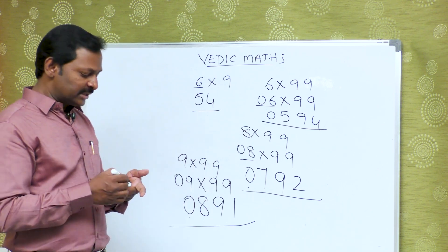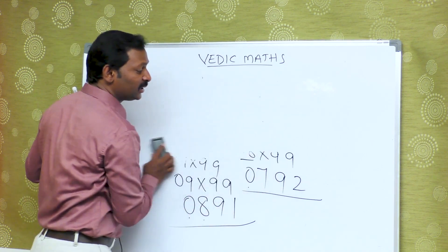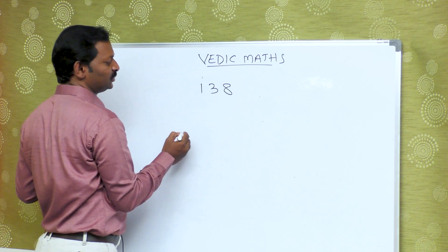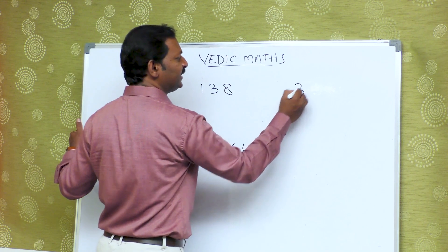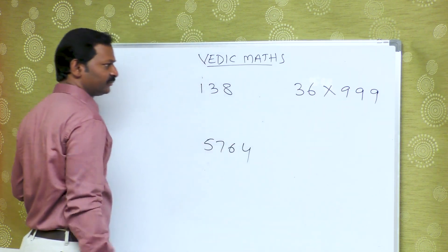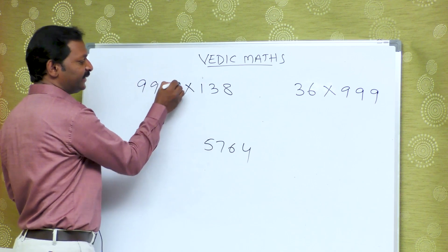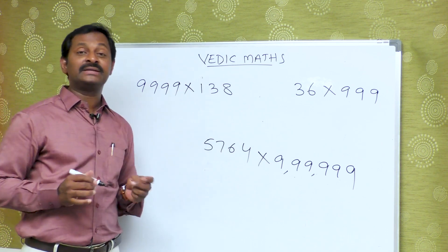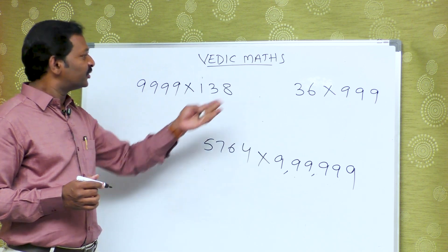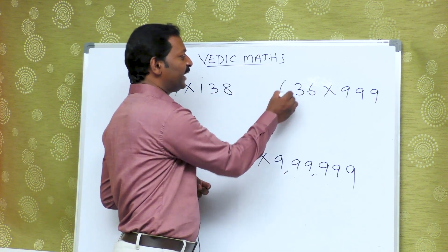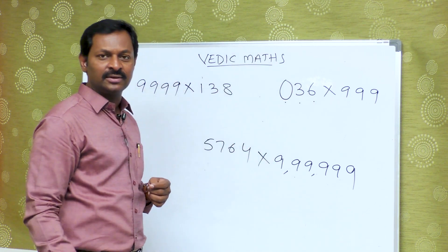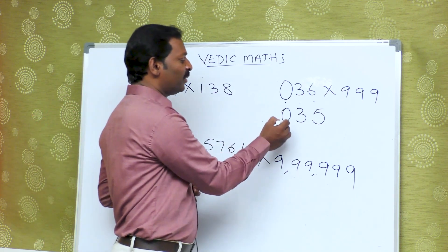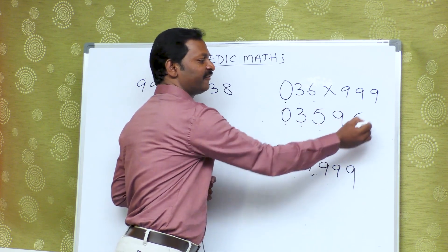Have you understood? Suppose this is 99. What if I give a bigger number — like 138 multiplied by 999, or 5764 multiplied by 9999, or 36 multiplied by 999? So for larger equal-digit numbers, we find 1 less than the given number: 0, 3, 5 is the first part of the answer. Then the combination of 0 is 9, combination of 3 is 6, combination of 5 is 4.